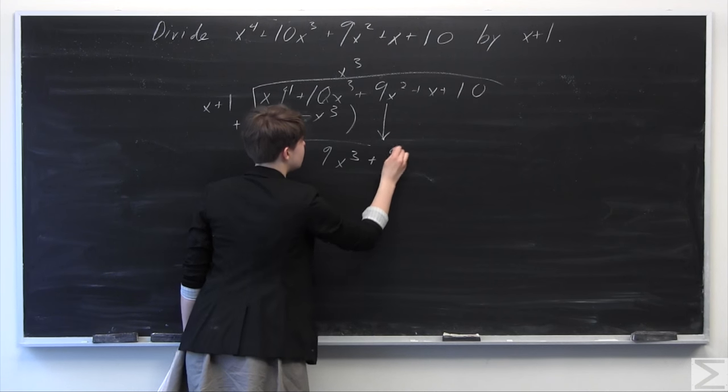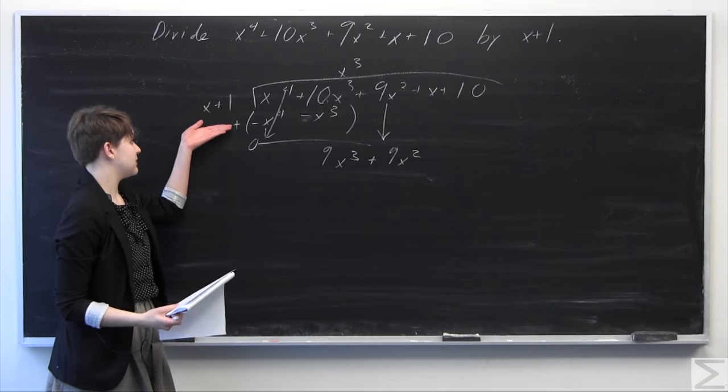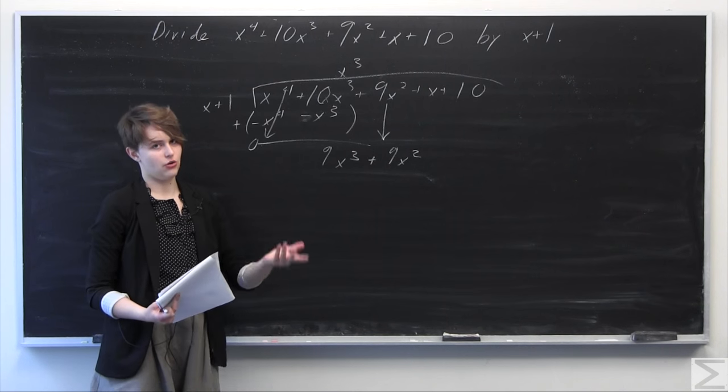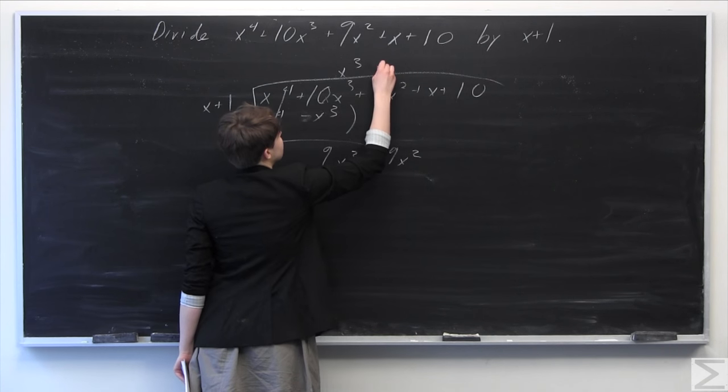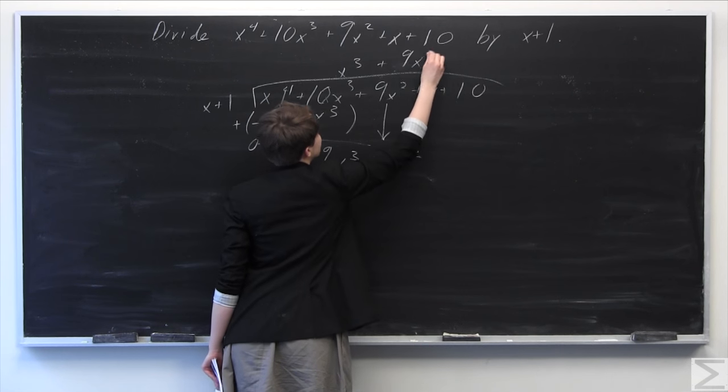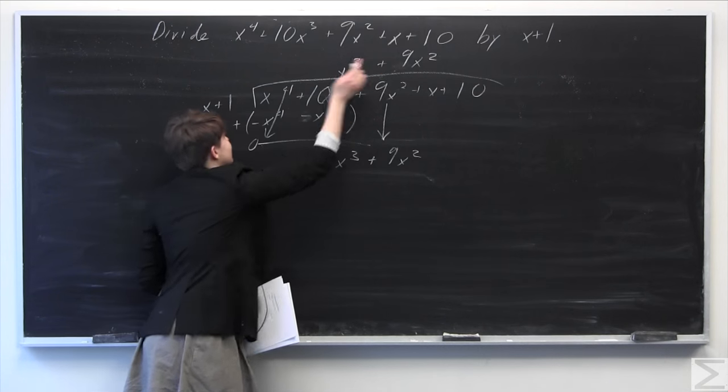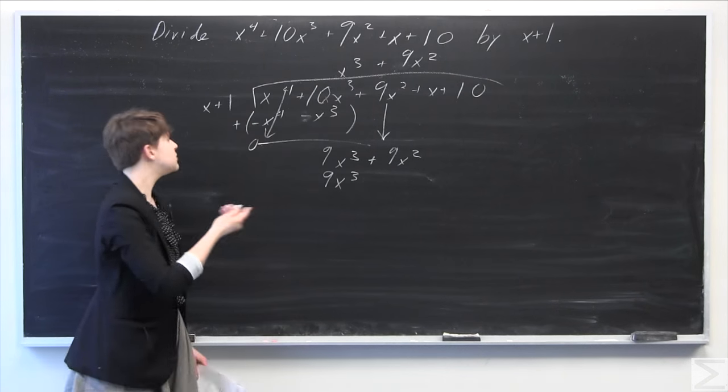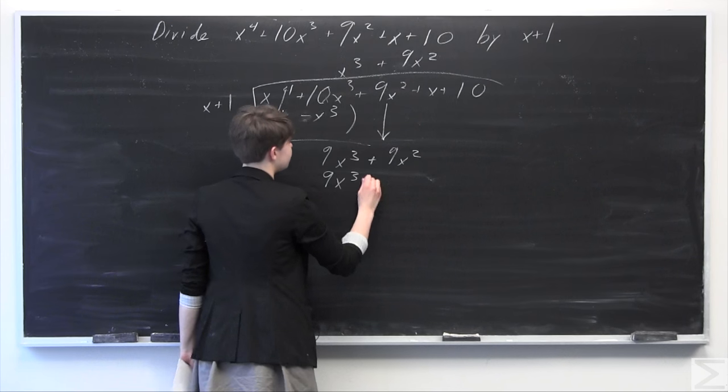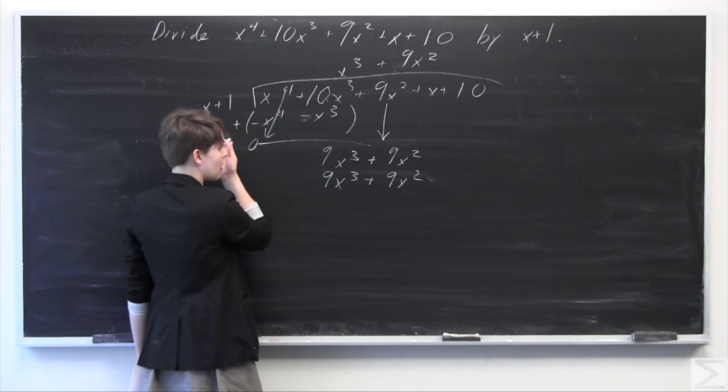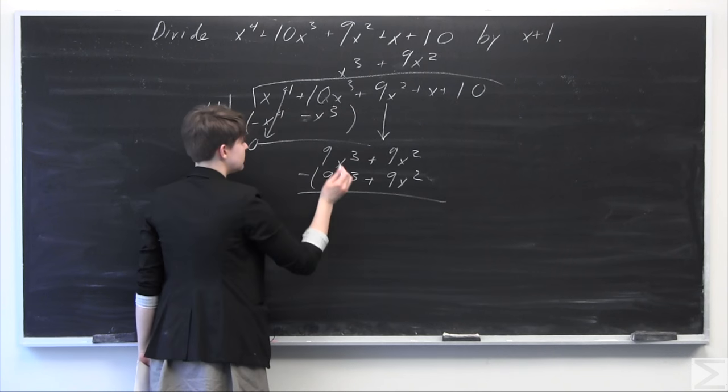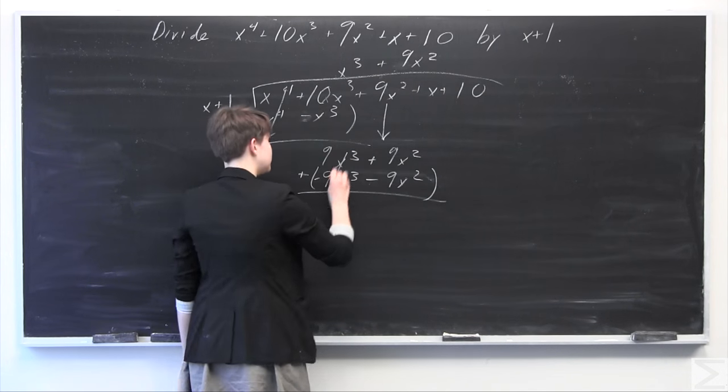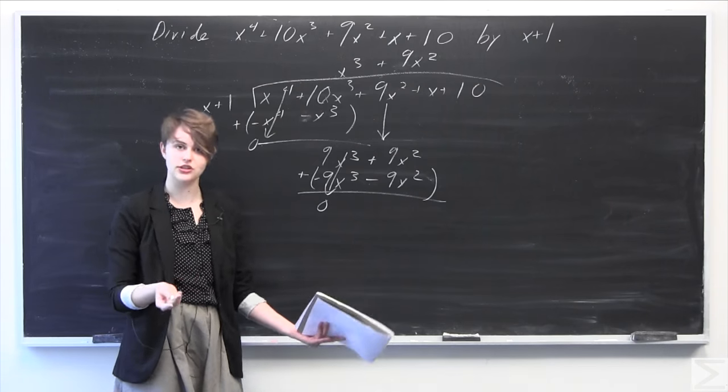So now we're going to drop down the 9x squared. So now we have x plus 1 on the outside here. We can see we need to multiply the x by 9x squared in order to get it to go into 9x cubed. So we're going to add on here 9x squared. So we're going to multiply 9x squared by x plus 1. So 9x squared times x is going to be 9x cubed, 9x squared times 1 is 9x squared. So we're going to subtract here. We can distribute the negative here. Positive turns to negative. We have 9x cubed here minus 9x cubed goes to zero. And 9x squared minus 9x squared also goes to zero.